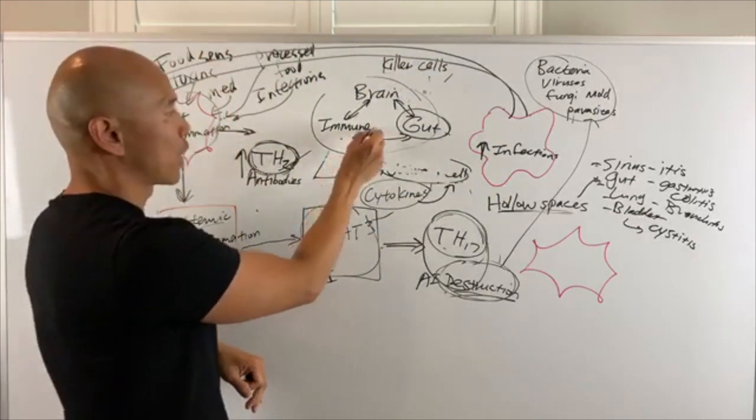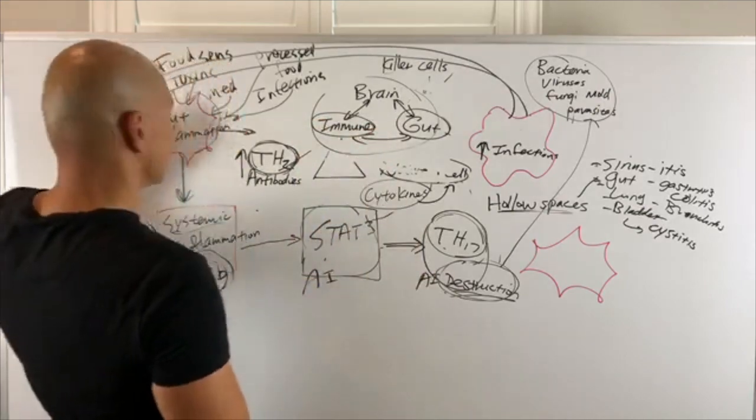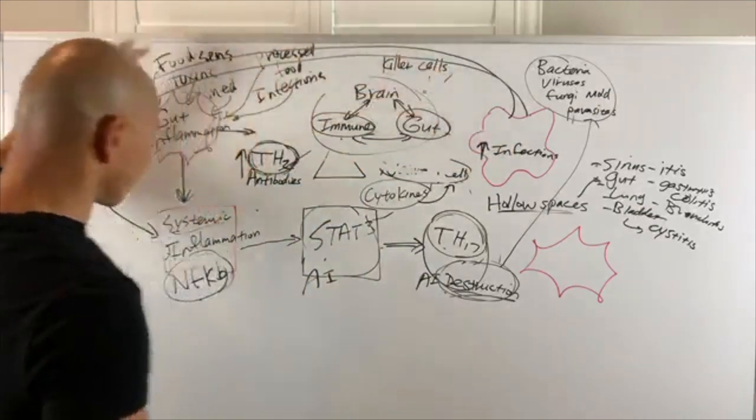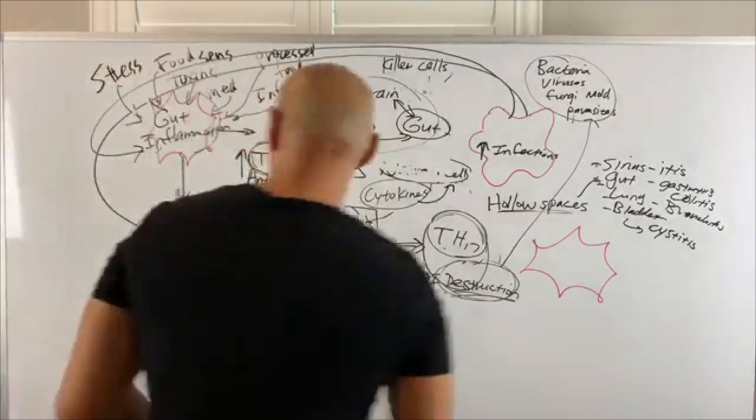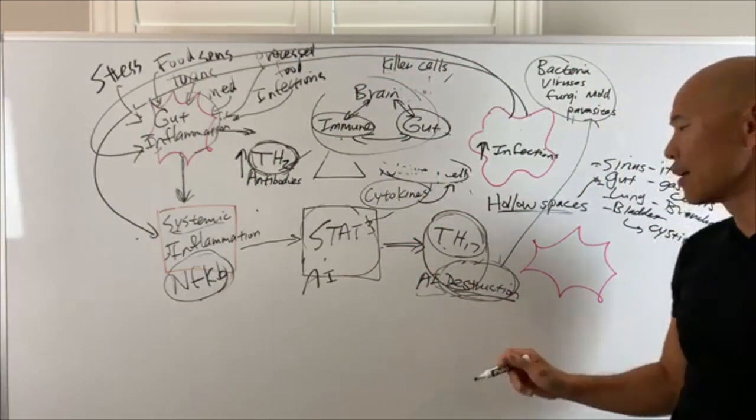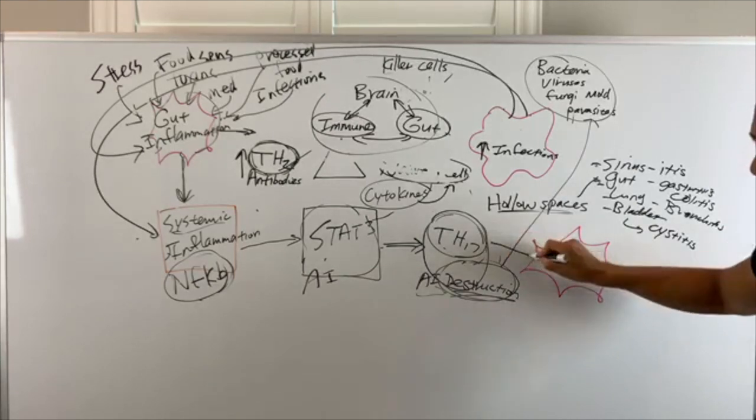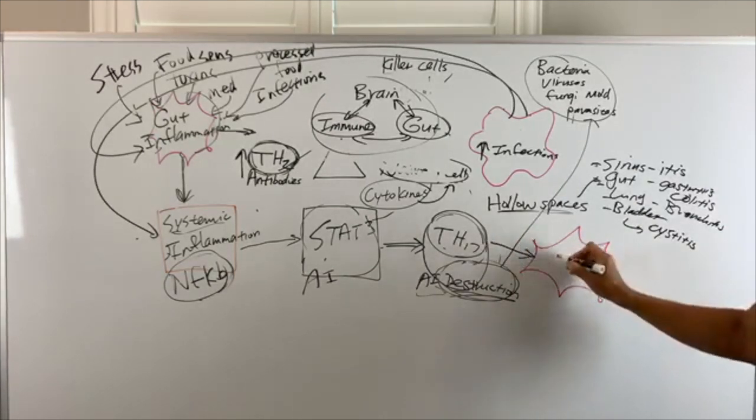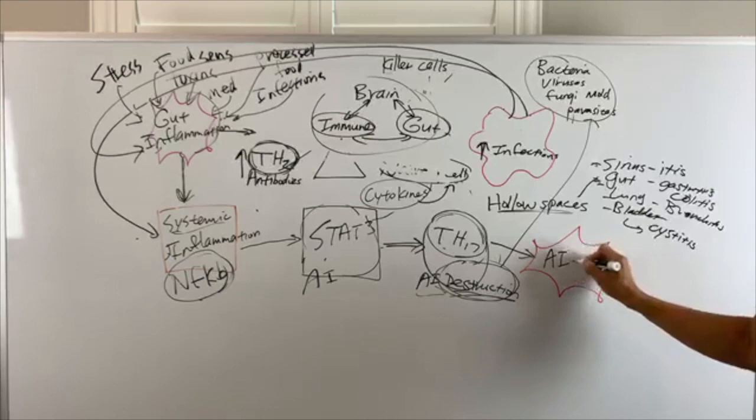Today, on this episode, I talk about the immune system and how the gut inflammation and infection then triggers systemic inflammation. And the systemic inflammation triggers this T helper 17 autoimmune destruction. Now, how does it lead into? Final block right here. This all leads into autoimmune flare-up.